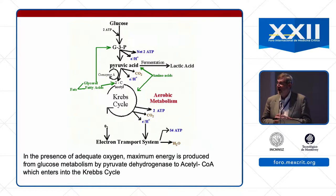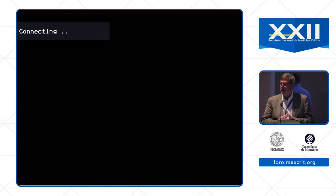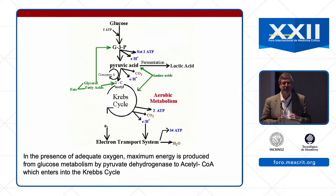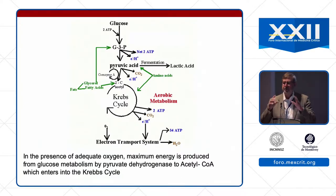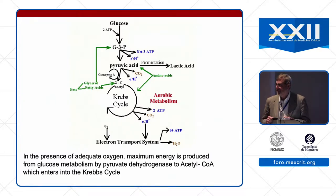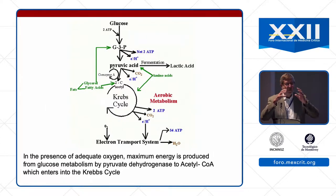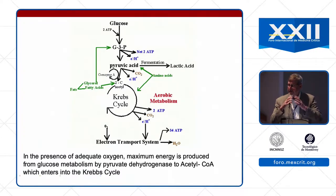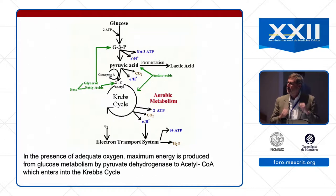This is the Krebs cycle — what we all had to memorize in medical school. Our body uses glucose to generate energy. Glucose is converted to pyruvate, and pyruvate to acetyl-CoA, which enters the Krebs cycle where it generates a lot of ATP. But if there's a problem in the Krebs cycle, or if there's no oxygen — because the Krebs cycle is oxygen dependent — the body responds to try to generate energy by other means.